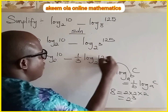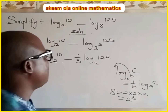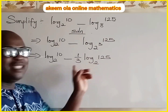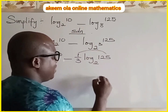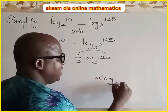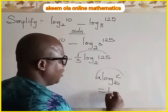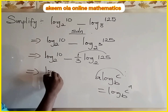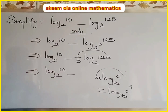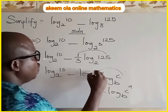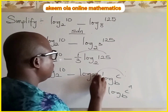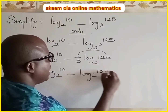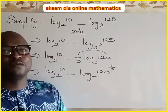We can still simplify further because we now have a coefficient. I can bring this coefficient inside — if you have a times log base b of c, the a becomes the exponent: log base b of c raised to power a. Applying that, we have log base 2 of 10 minus log base 2 of 125 raised to power one over three.